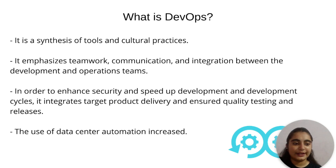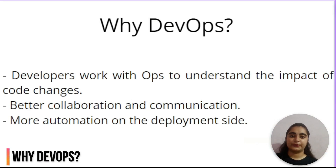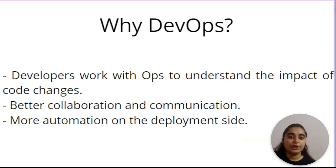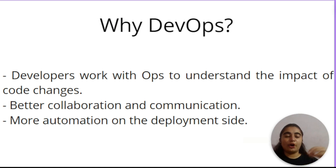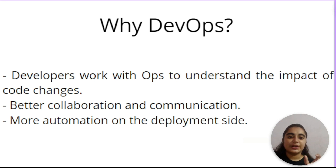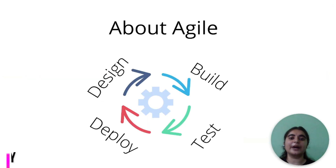Why do we use DevOps? To make development and operations teams work together. Development teams work with operations to understand the impact of code changes, since code changes in production can create bugs and errors, and the operations team also needs to understand the code base. DevOps helps create better collaboration and communication, and enables automation on the deployment side — for example, with continuous integration and continuous delivery, if you change something in your code it automatically gets deployed to production.